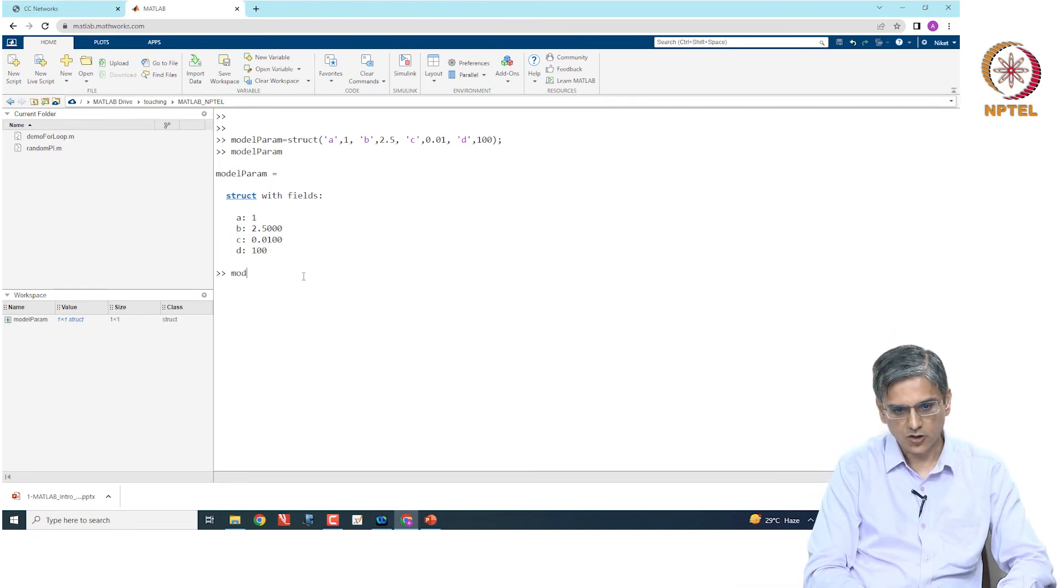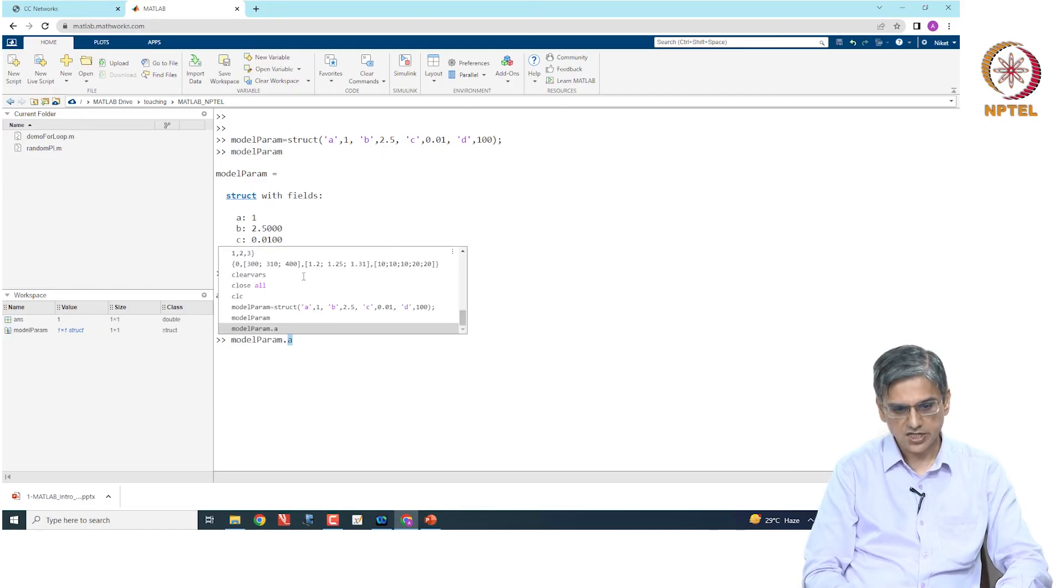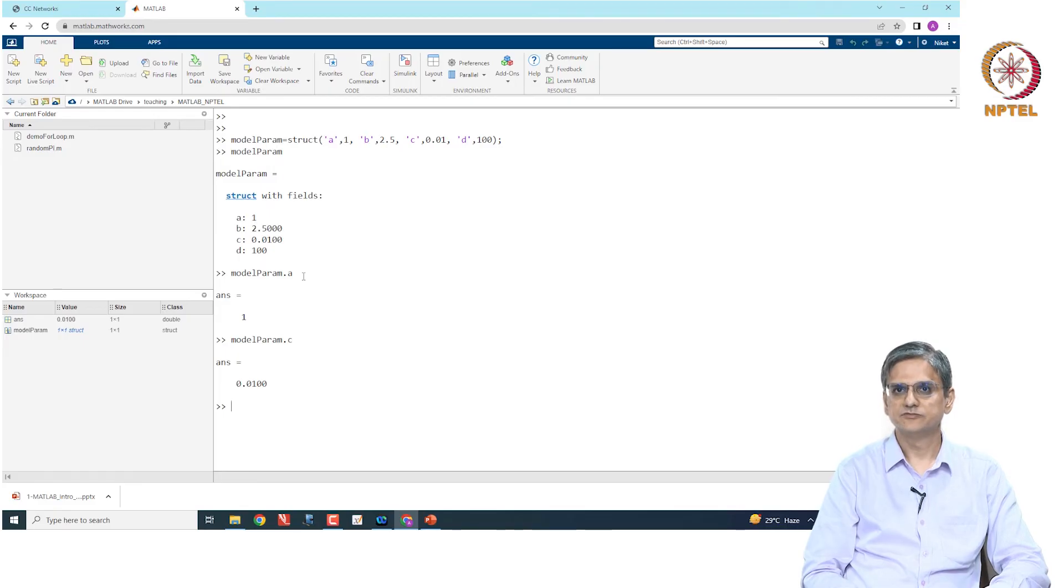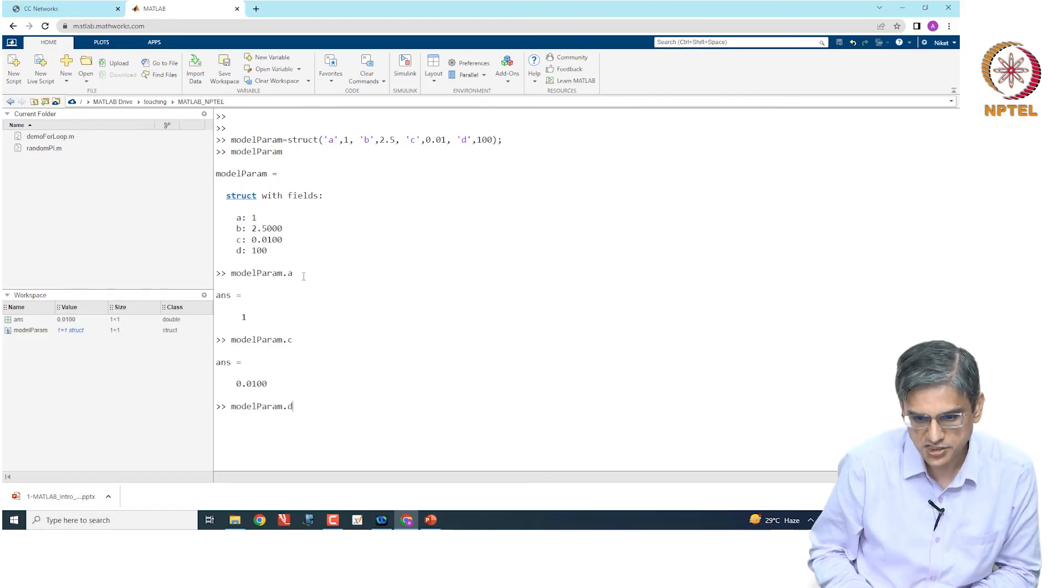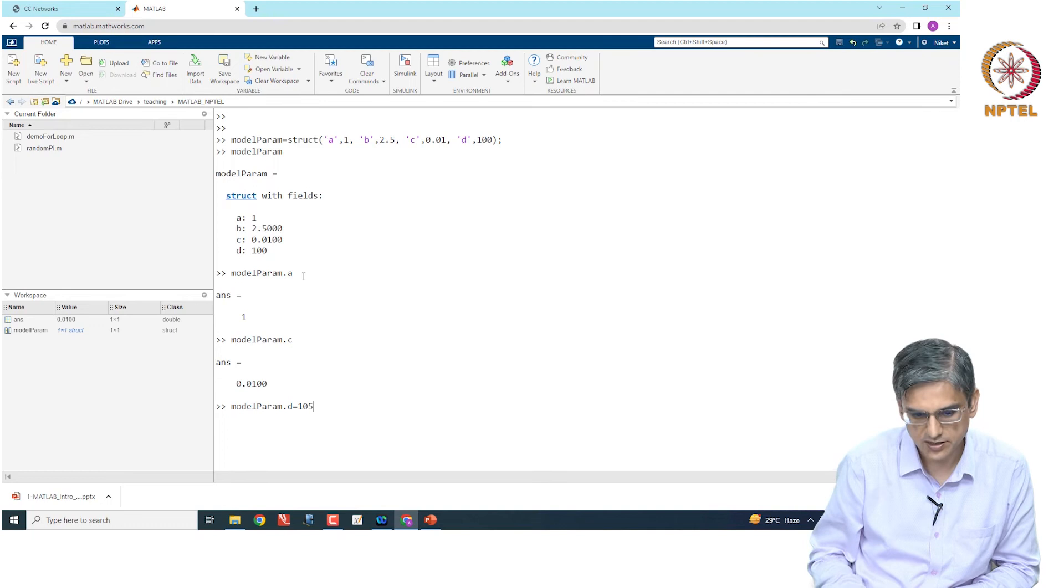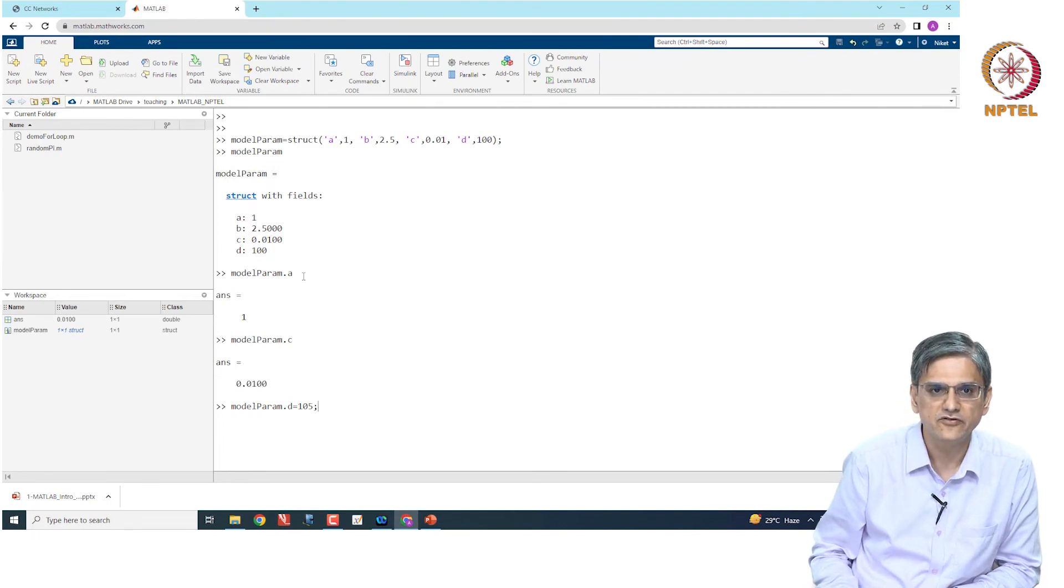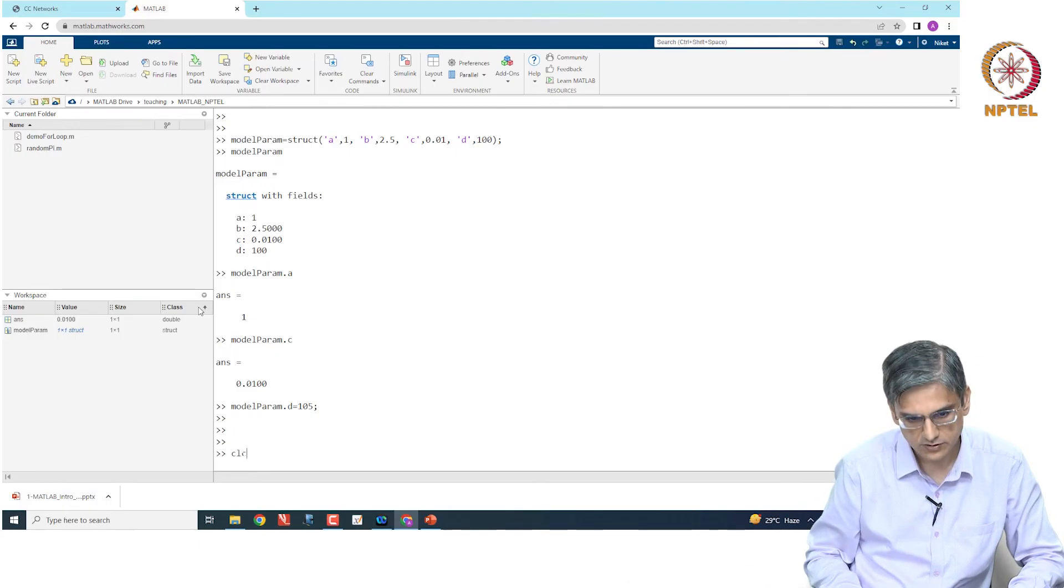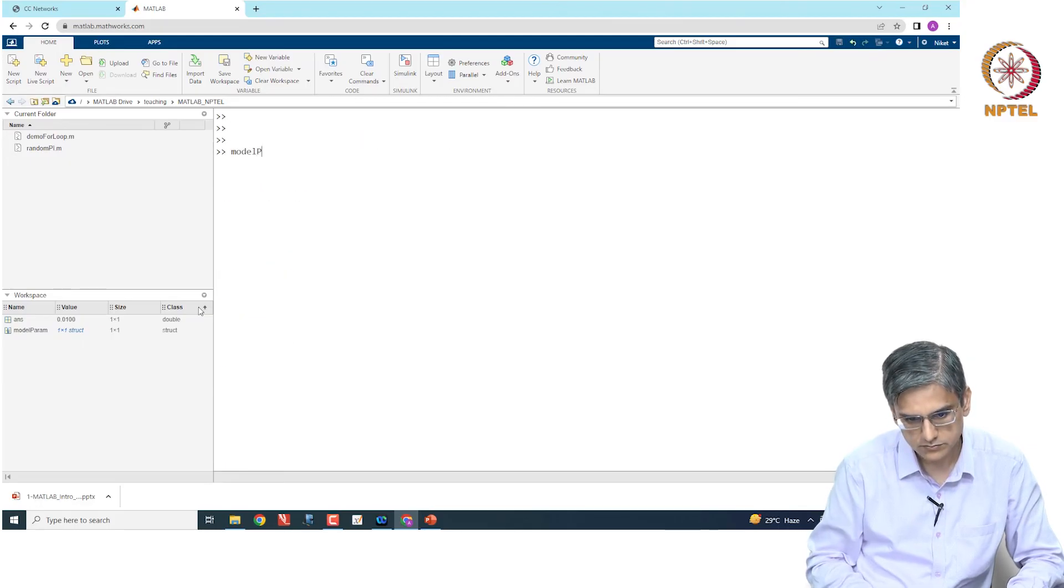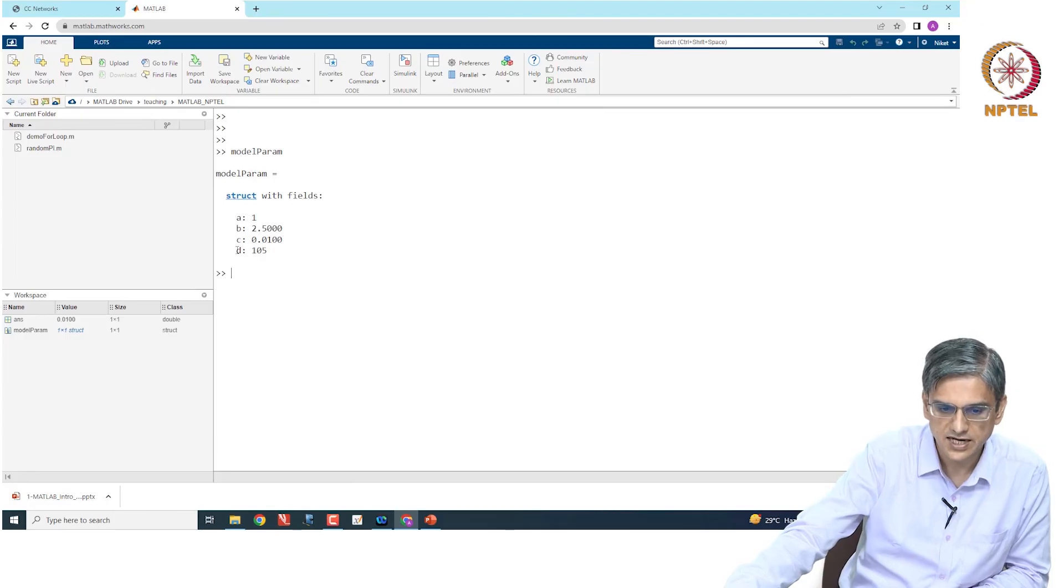Now we can have model param dot a is going to give us access to the parameter a, model param dot c will give us access to the parameter c. Let us say now we want to change the model param dot d. We want to change it from 100 to 105. We can say model param dot d equal to 105 and enter and only the model param d is going to be changed.